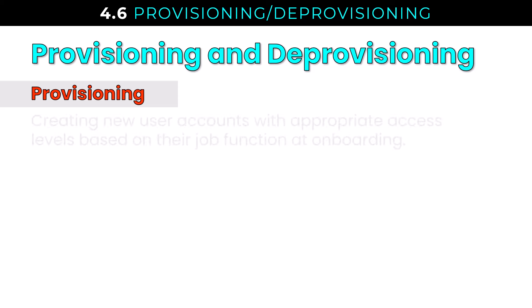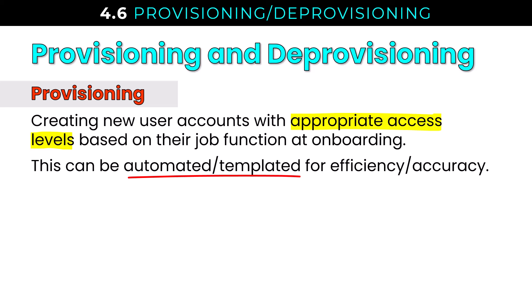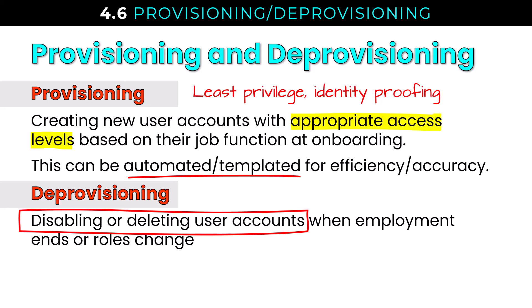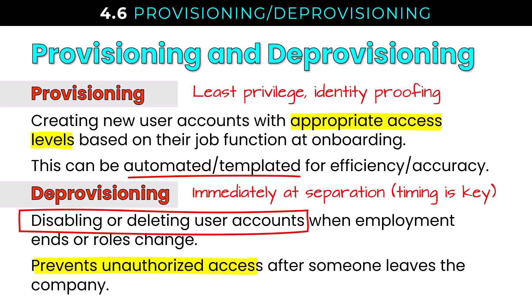Provisioning is where the lifecycle begins — creating new user accounts with appropriate access levels based on job function at onboarding. This is often automated or templated for efficiency and accuracy. We provision with least privilege access, and identity proofing is part of the process. The lifecycle ends with deprovisioning: disabling or deleting user accounts when employment ends or roles change. Immediately deprovisioning at separation is important — waiting hours or a week means that separated employee retains unauthorized access during that window.